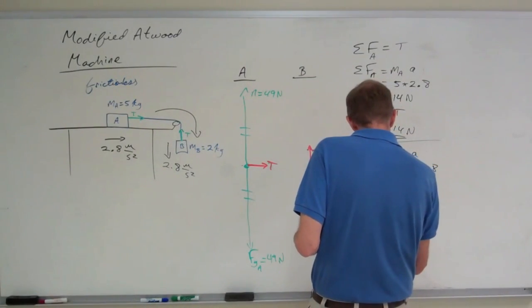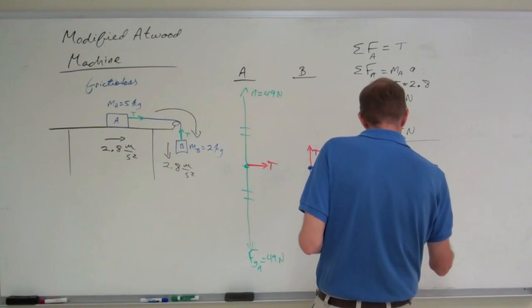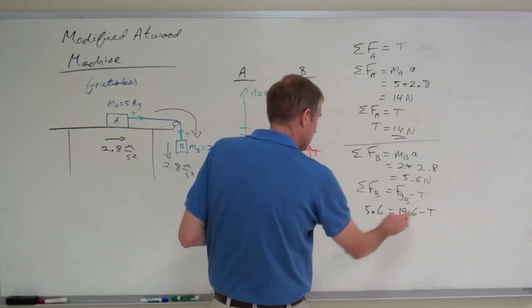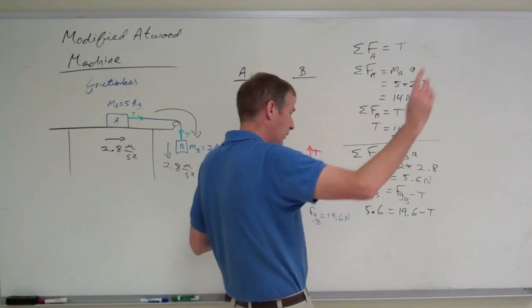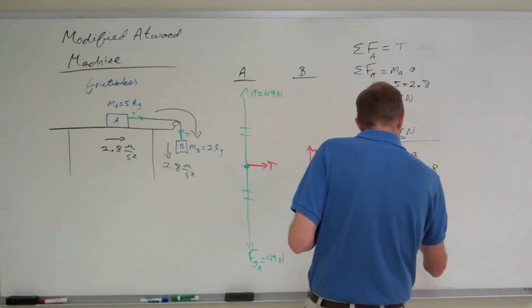So, 5.6 equals 19.6 minus t. So, I add t to the other side, subtract 5.6 to that side, and I get that t equals 14 newtons.